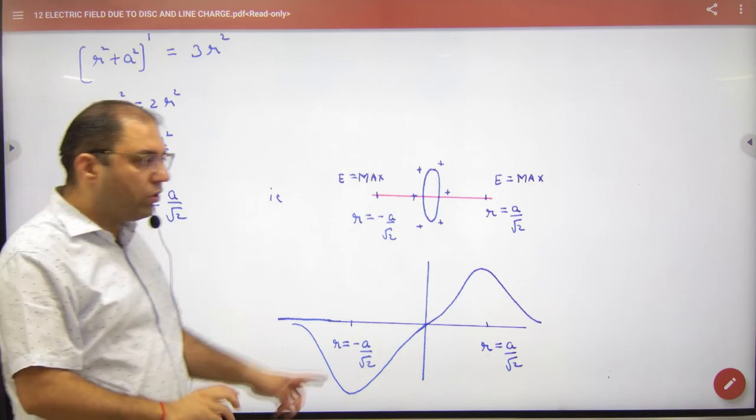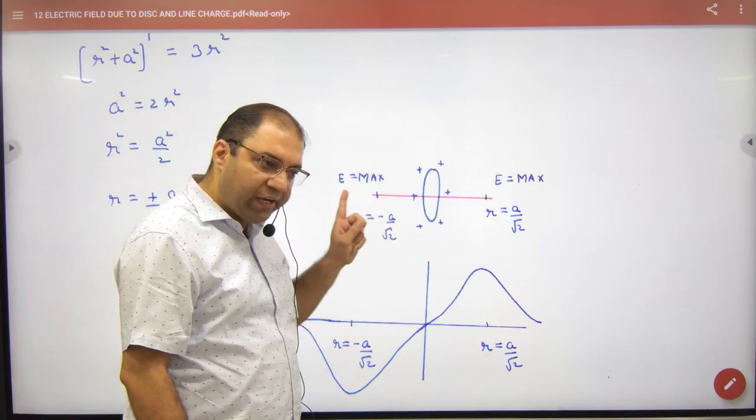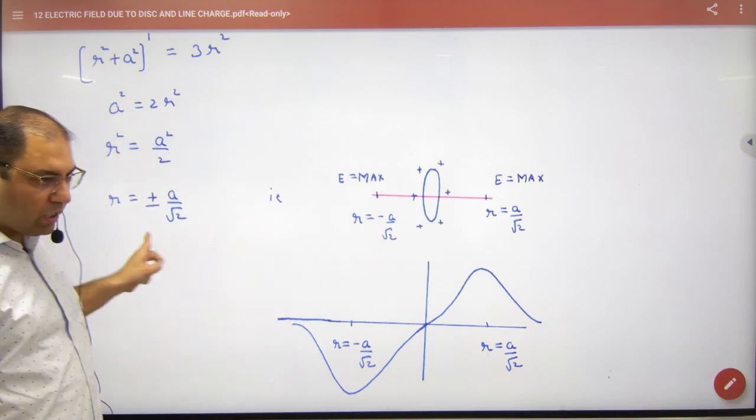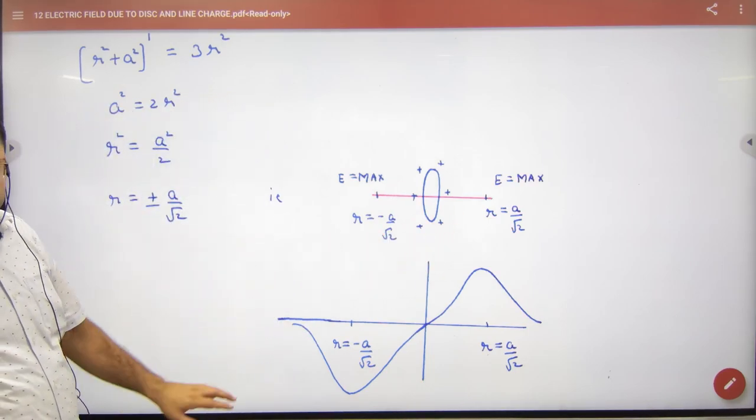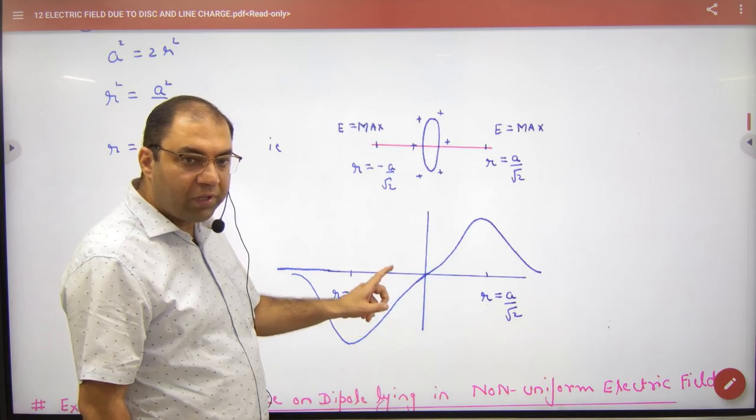And why is plus minus? Because one right will be point, one left will be point. So please draw this diagram. And with this, that graph, what is the value of E's value center? Zero.